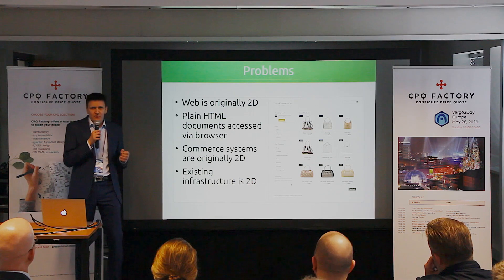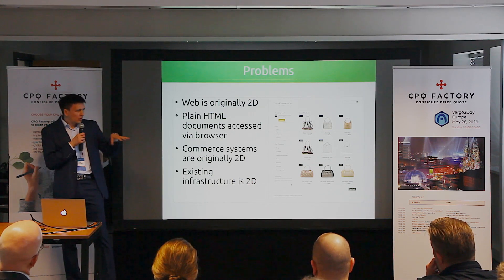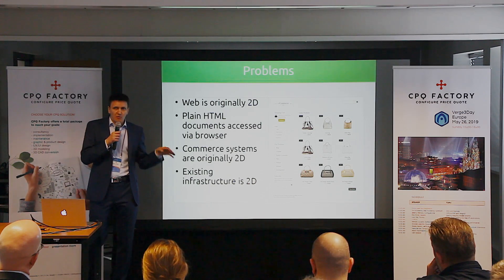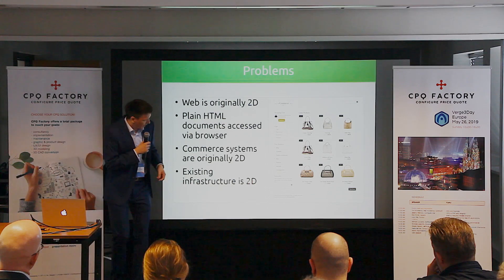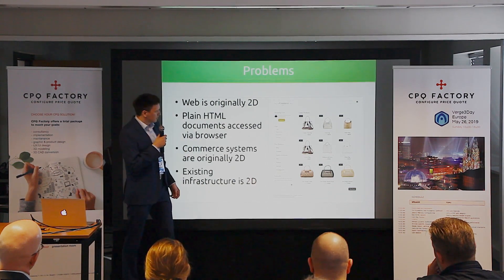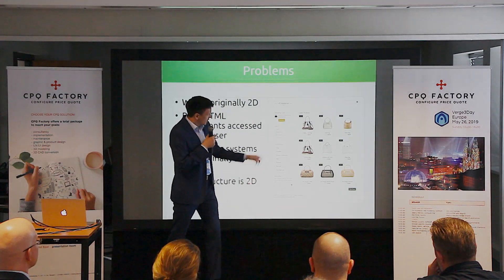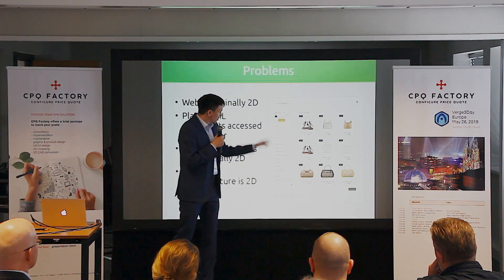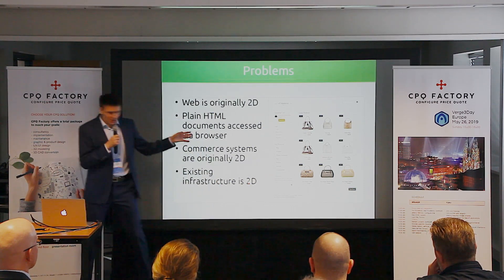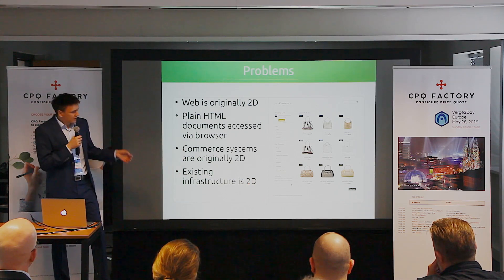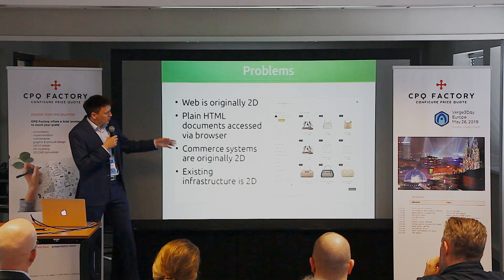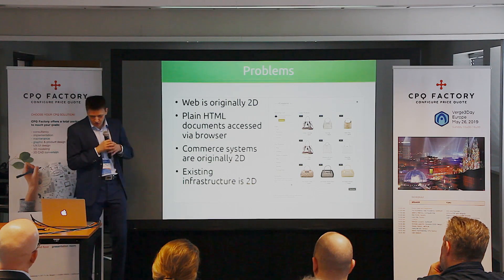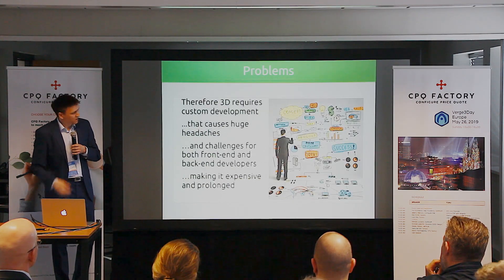The problems are that the web is originally 2D — plain documents served from remote locations and viewed via the browser. A typical e-commerce website has images, prices, names, descriptions, product categories, and a shopping cart. It just works beautifully, but it's basically 2D and is generated on the server as 2D documents. All existing infrastructure is 2D.